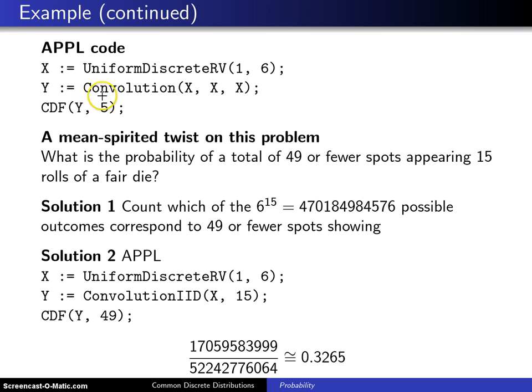There is also a routine that's known as convolution which will add up three of these, each with the same distribution, and we can put that into Y. Notice that the support of X will go from one to six. Since we're adding up three of these, the support of Y will go from one up to 18.